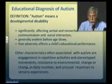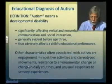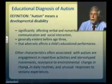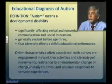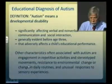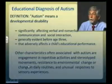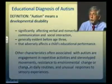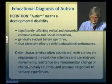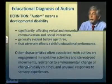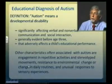Moving to the educational diagnosis of autism, I'm drawing here from guidance from the Virginia Department of Education. The definition of autism in the special education context means a developmental disability that significantly affects verbal and nonverbal communication and social interaction — similar to the first DSM-5 criterion. It is generally evident before age three and adversely affects a child's educational performance. Other associated characteristics include engagement in repetitive activities and stereotyped movements, resistance to environmental change or change in daily routines, and unusual responses to sensory experiences.